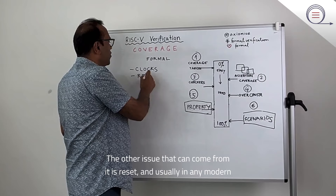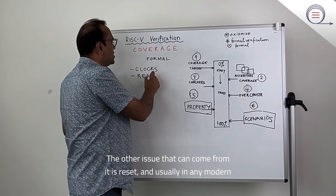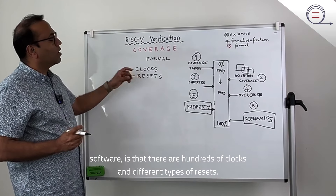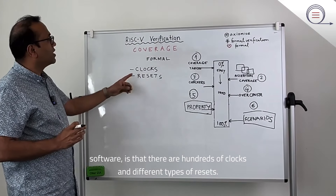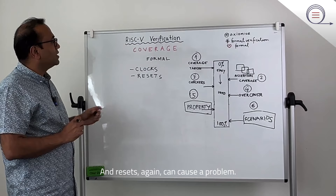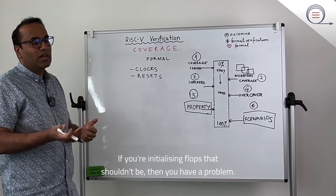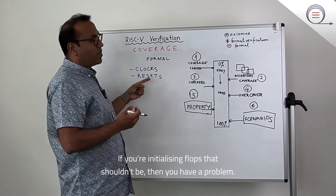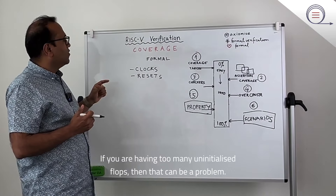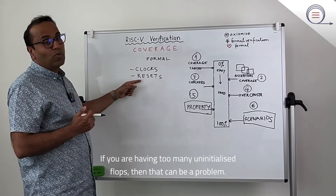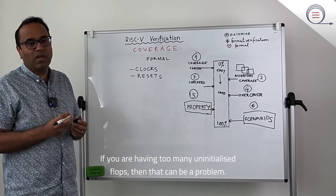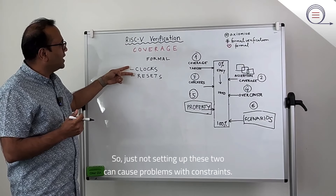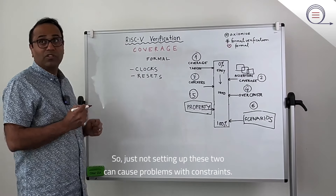Another issue can come from resets. Usually in any modern-day SOC there are hundreds of clocks and different types of resets. Resets again can cause a problem — if you're initializing flops that shouldn't be, then you have a problem. If you are having too many uninitialized flops, that can also be a problem. Just not setting up these two can cause problems with constraints.